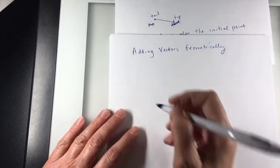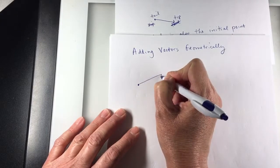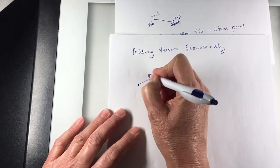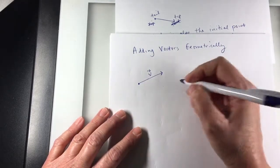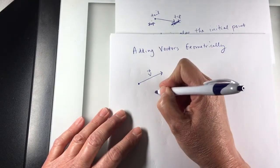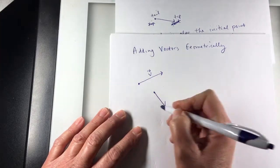I'm going to draw two vectors. I'll call this one vector V and another vector. I'm going to point this one in this direction. Vector U.